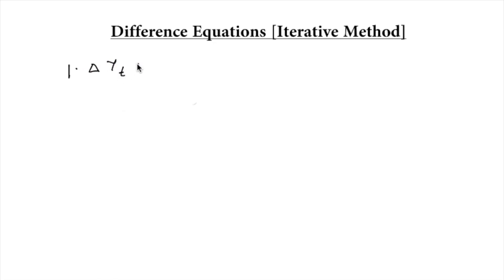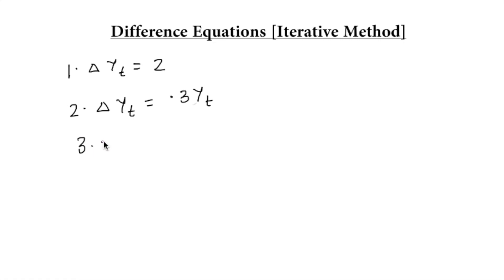We start with the iterative method. In the iterative method, there are three types of questions. The first type is: change in yt is equal to any constant number. The second type is: change in yt is equal to 0.3yt. The third type is a typical difference equation format: yt+1 is equal to a·yt plus b.